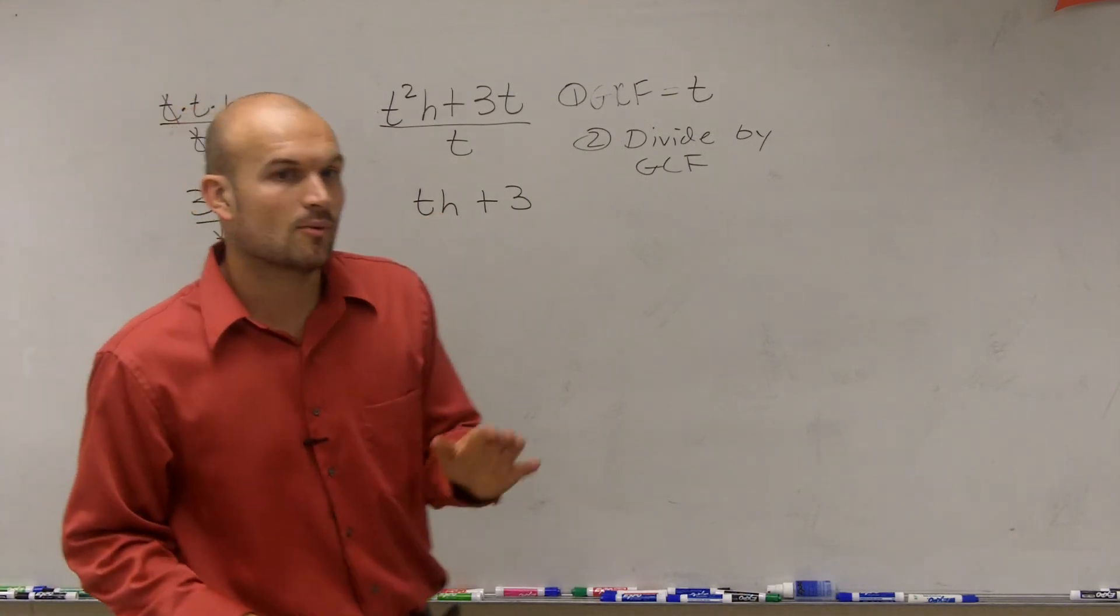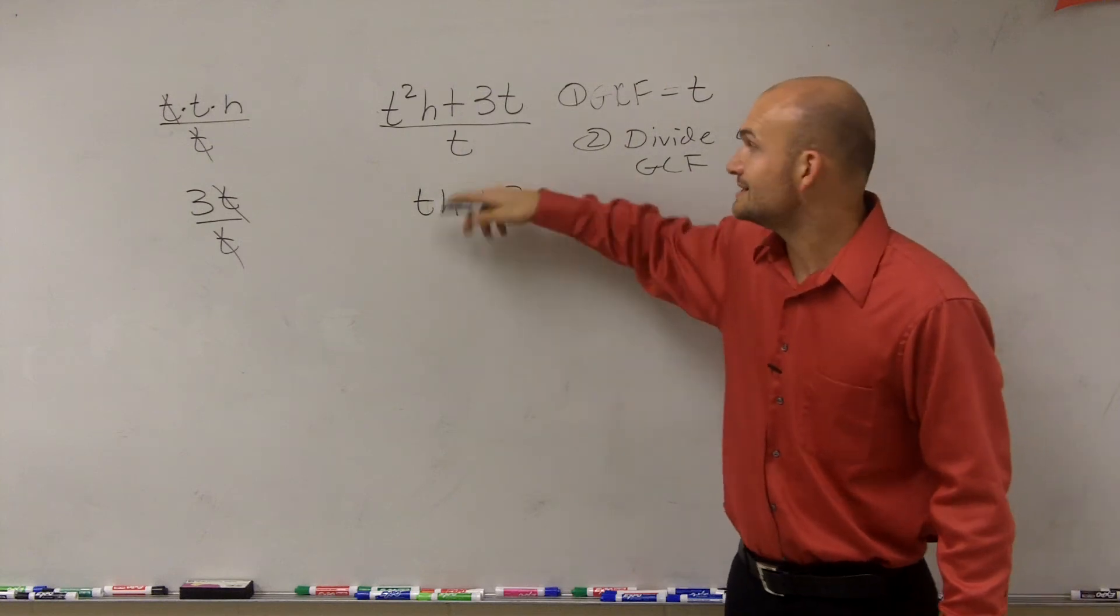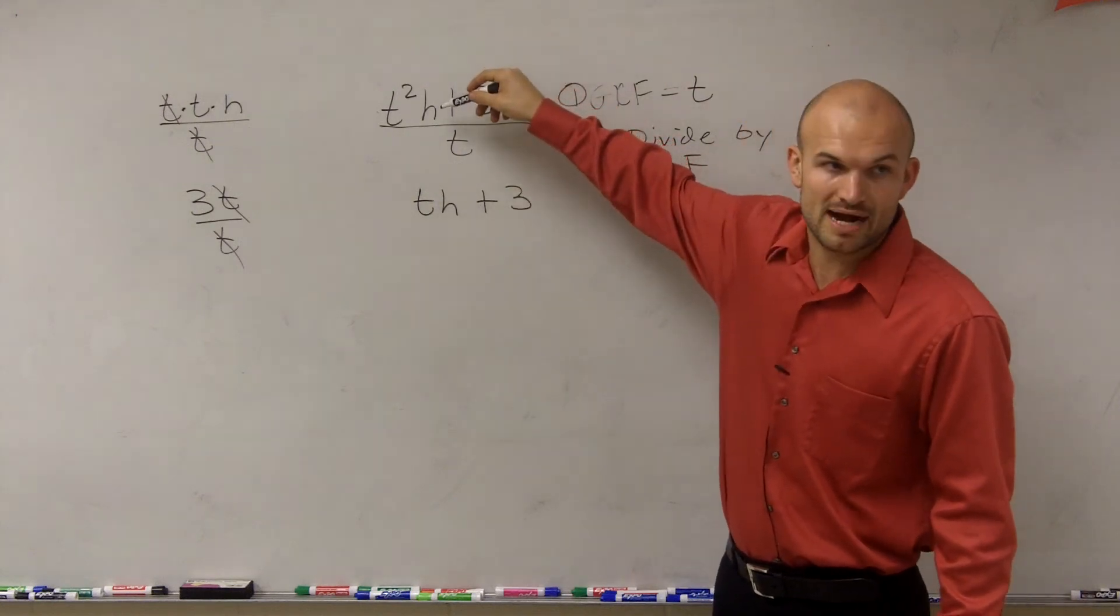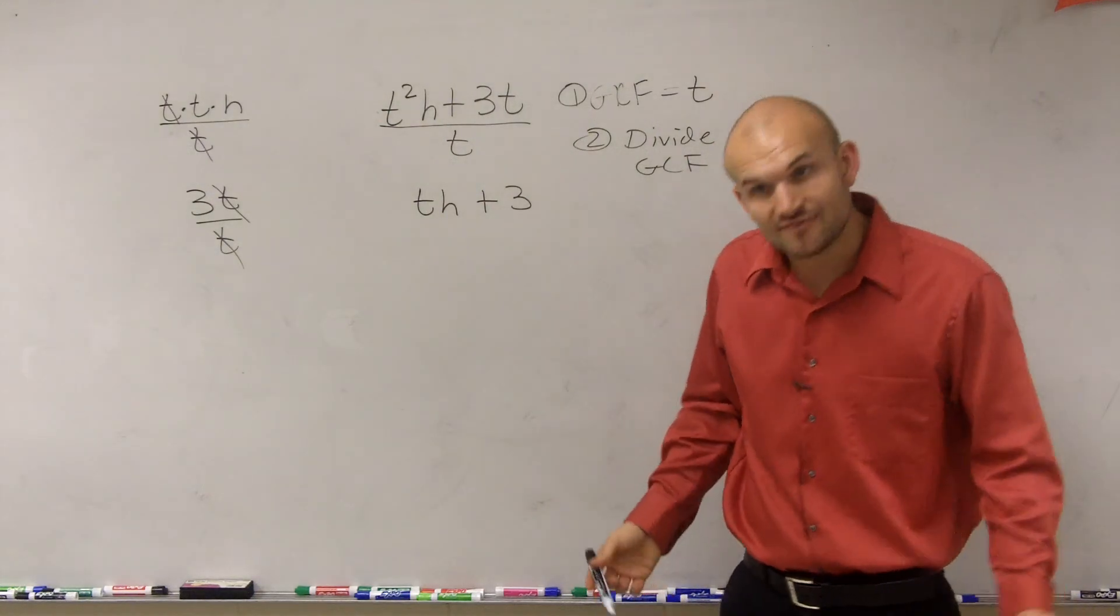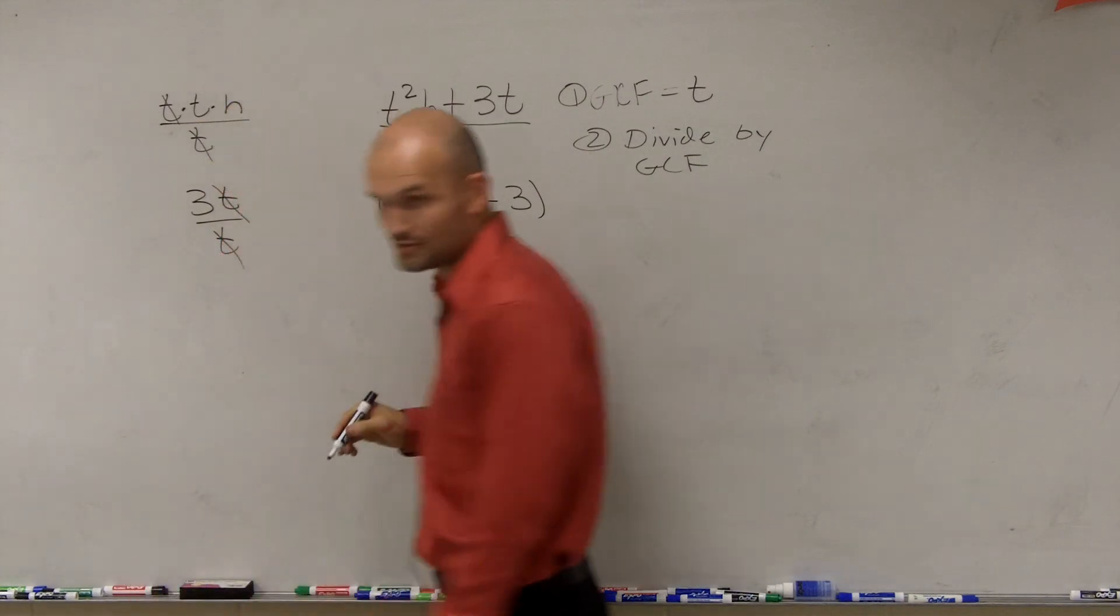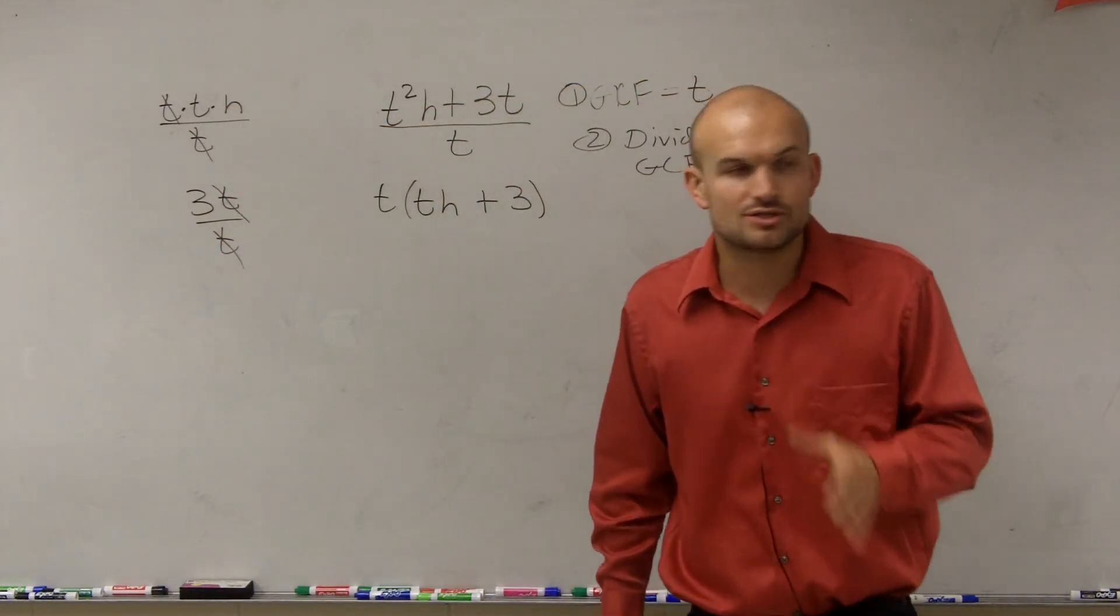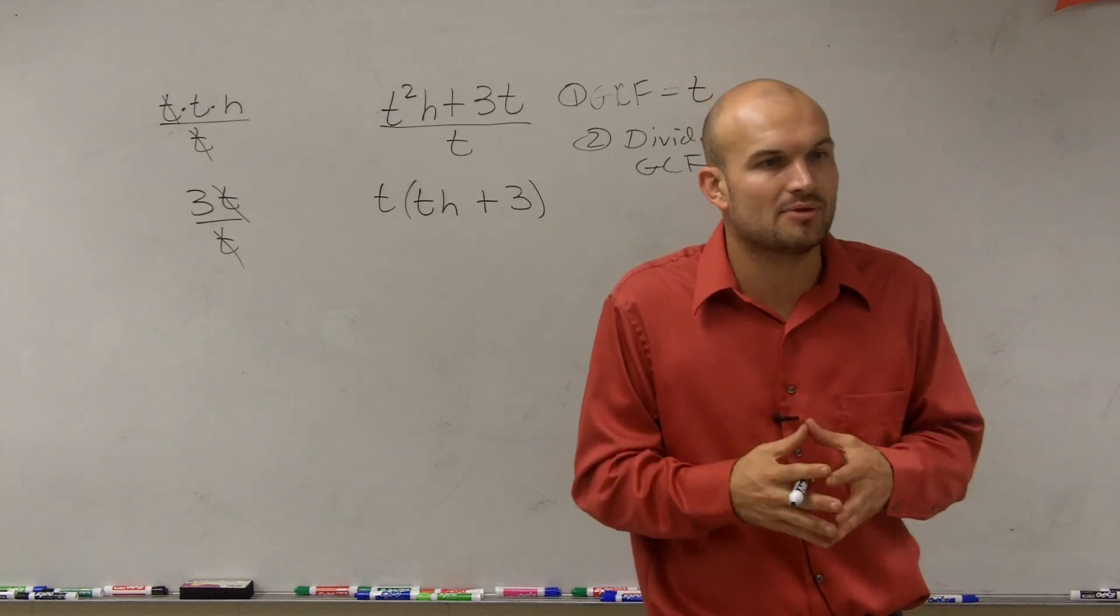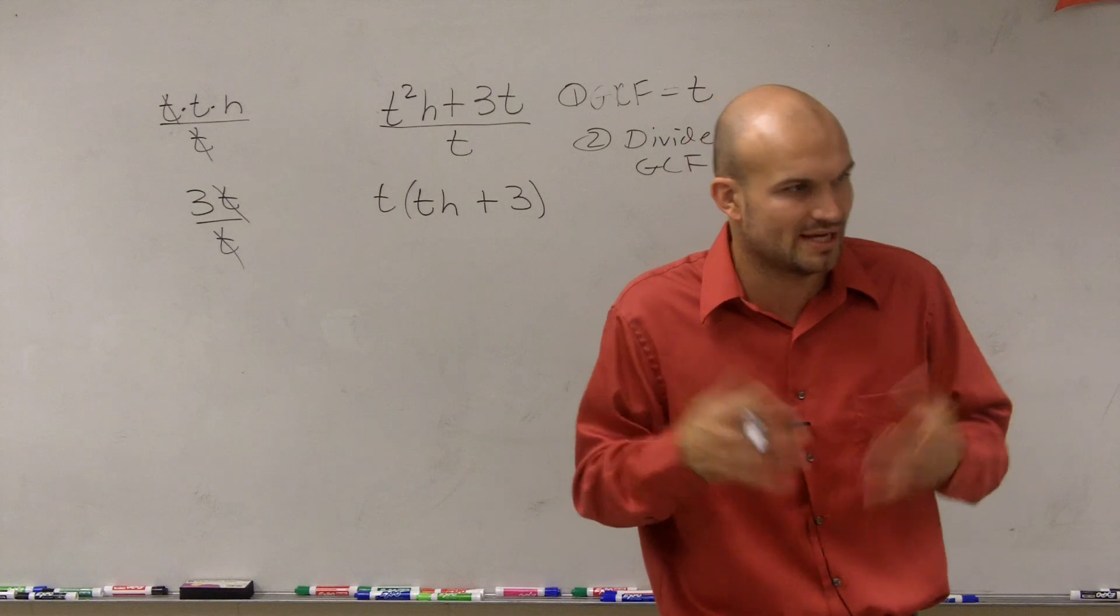It's close. But what this is, is this is a factor. Meaning this binomial divides into that binomial. Well, how many times does it divide into there? It divides into there t times. So remember, when I ask you to factor something, what you're going to do is you need to rewrite your problem as a product of its factors. You need to write it as a product, a multiplication problem. So therefore, this is going to be our final answer.